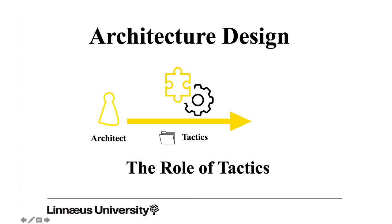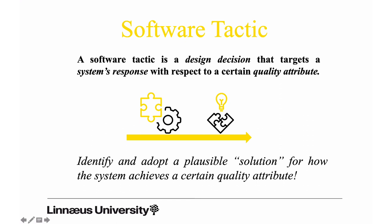We will introduce the role of tactics in the architecture design process. The book defines a software tactic, or architecture tactic, as a design decision that targets a system's response with respect to a certain quality attribute — a design decision or set of design decisions that focuses on how the system should respond to certain stimuli in order to achieve certain quality attributes.